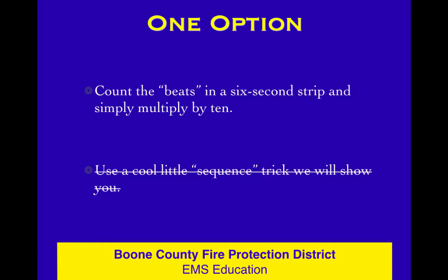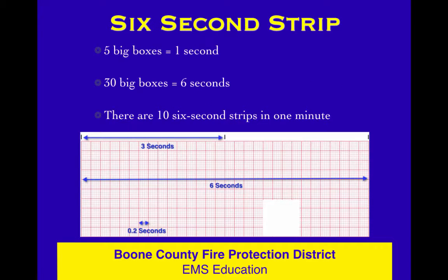The 300-100 sequence we talked about for regular rhythms will not work in an irregular rhythm — kind of logically, you just wouldn't know where you're going there.